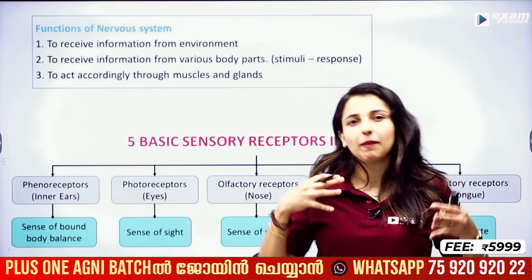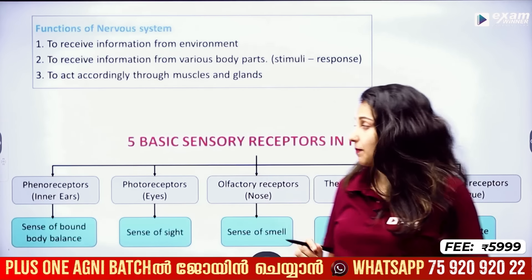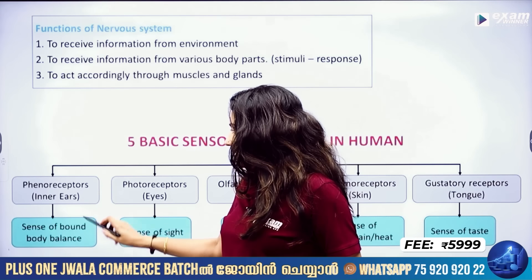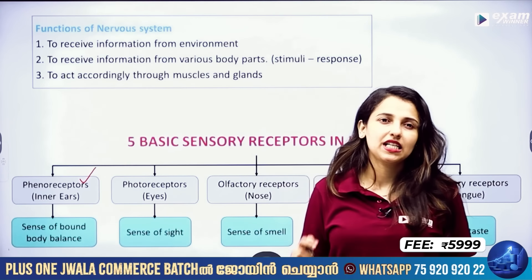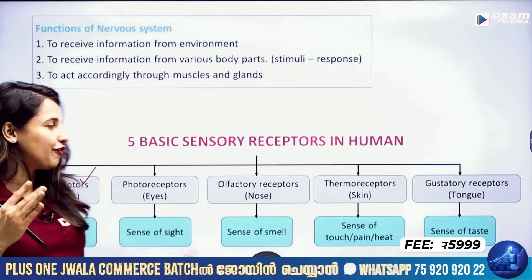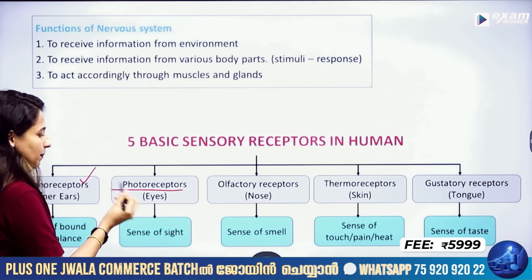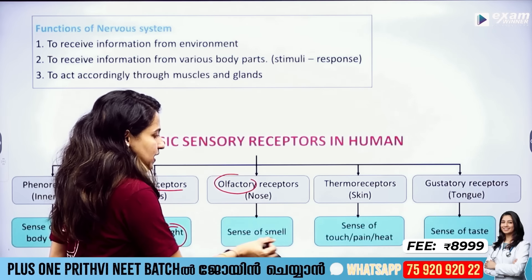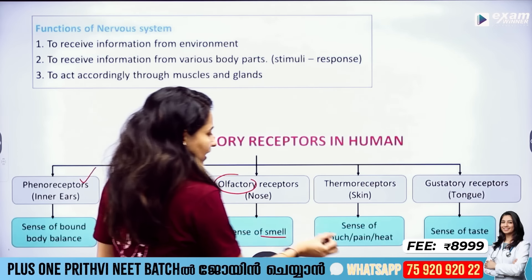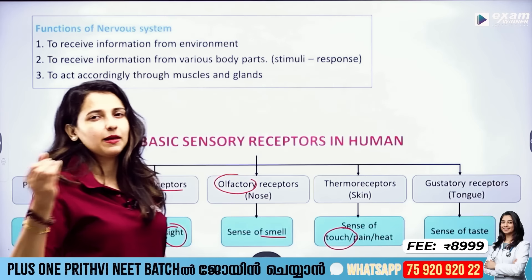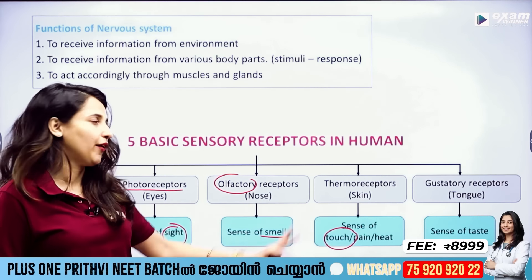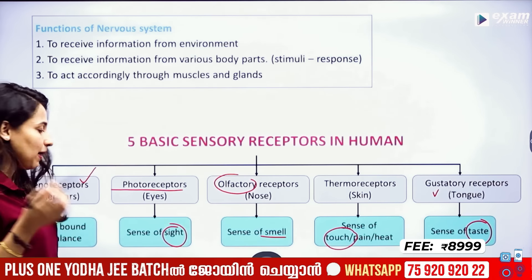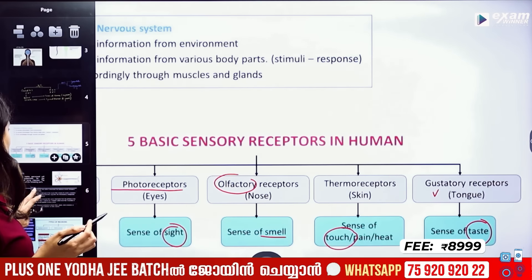Then we have receptors — sensations and receptors. We have phonoreceptors for balance in the ear and body. Then photoreceptors for vision, and olfactory receptors. Then thermoreceptors for touch, pain, pressure, cold, or heat. And finally, gustatory receptors for taste. There are many receptors in our sense organs.